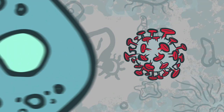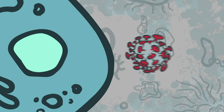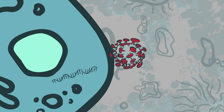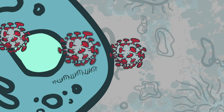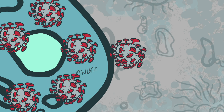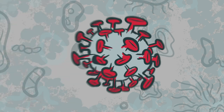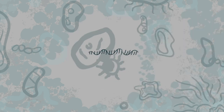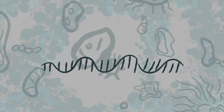When the virus causing COVID-19 attaches to a cell, it inserts a small piece of RNA that will force the cell to make more copies of the virus. In order to detect the virus in a sample, we have to be able to isolate that unique piece of RNA away from everything else.